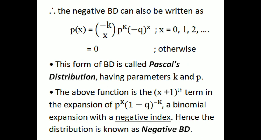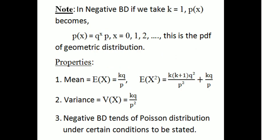Therefore, the summation of P(X) equals 1, confirming it is a valid probability distribution. The negative binomial distribution can also be written as P(X) = C(-K, X) × P^K × (-Q)^X, for X = 0, 1, 2, 3, and 0 otherwise. This form is called Pascal's distribution with parameters K and P. The function is the (X+1)th term in the expansion of P^K × (1 - Q)^(-K), a binomial expansion with a negative index, hence the name negative binomial distribution.